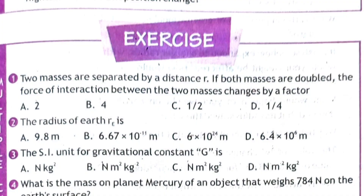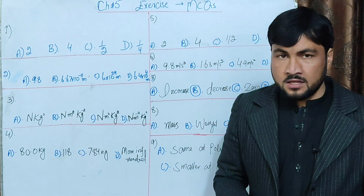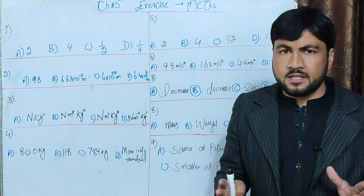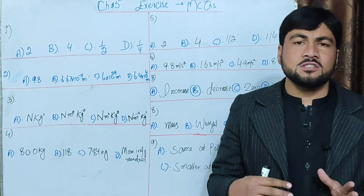The two masses are separated by a distance r. If both masses are doubled, the force of interaction between the two masses is changed by a factor. The two objects with masses M1 and M2 are separated by distance r.